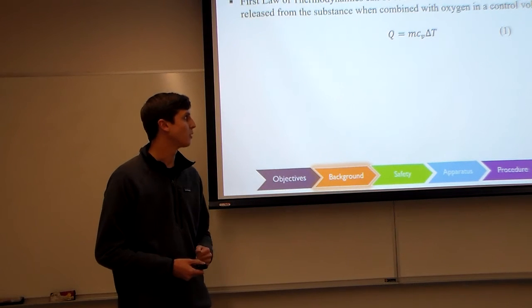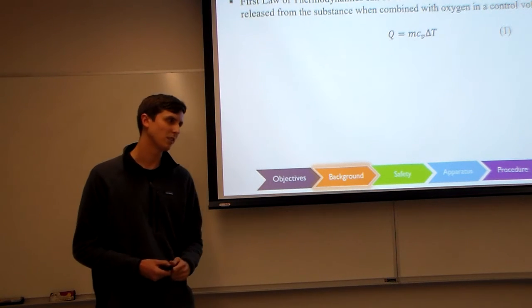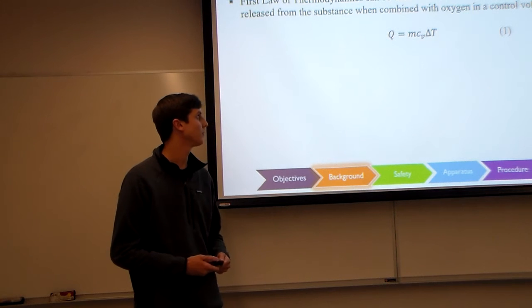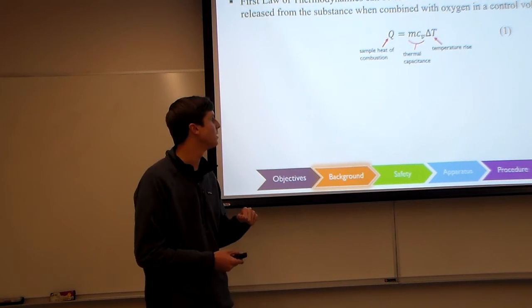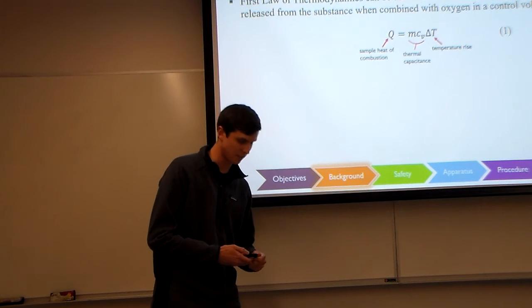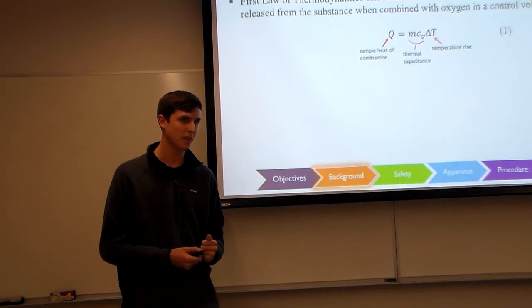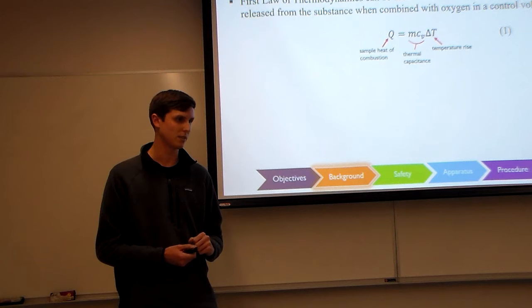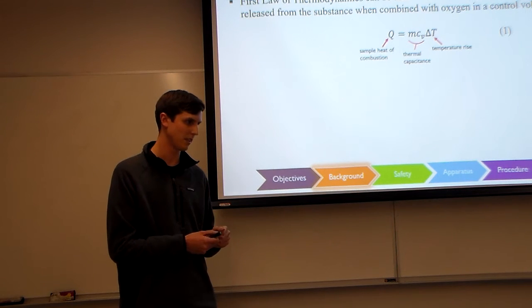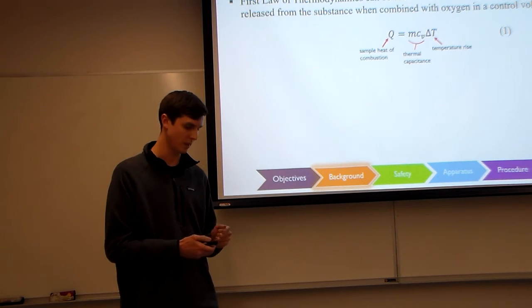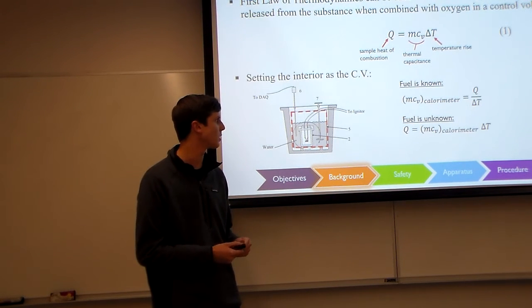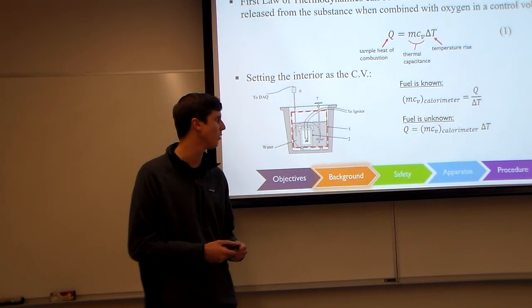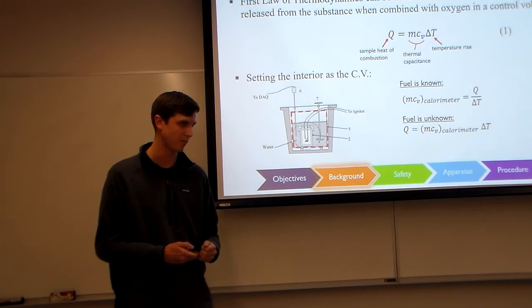Just a little bit of background for the equations we're going to be using here. We have the sample heat of combustion, which is equal to the thermal capacitance times the change in temperature. For this experiment, we're going to say that the inside of our calorimeter is going to be our control volume. So in that case, if the fuel is known, we can find the thermal capacitance, and if the fuel is unknown, we will be finding the heat of combustion of that.